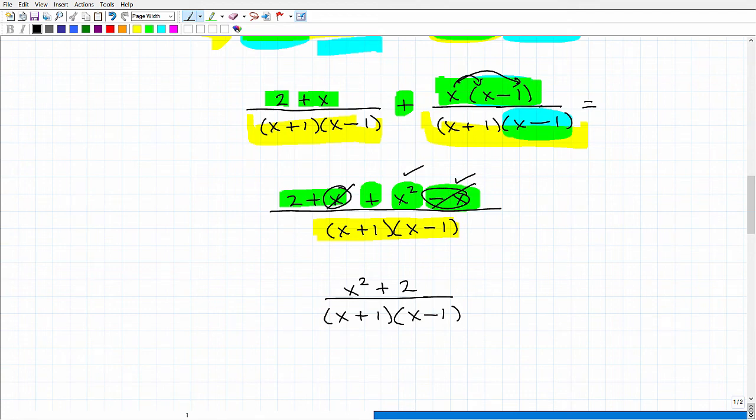So that leaves me with x² + 2 over the denominator of (x + 1)(x - 1). And you could rewrite this as x² - 1. That's not necessary.